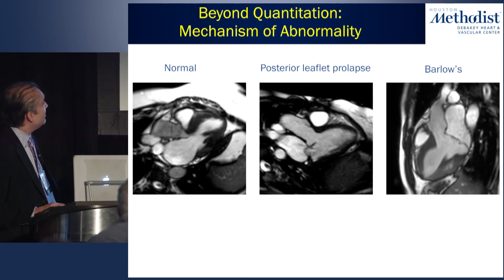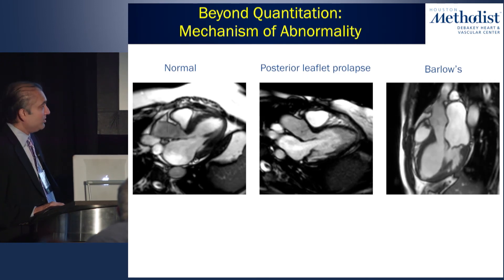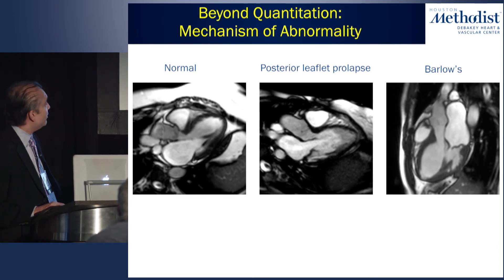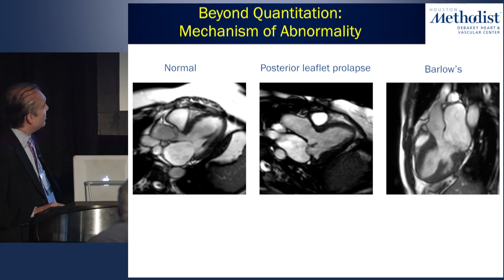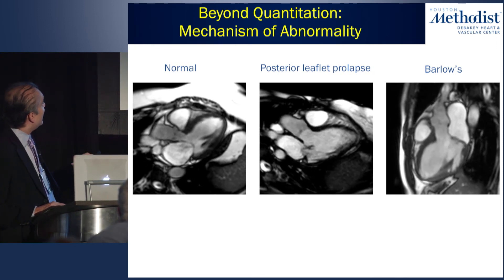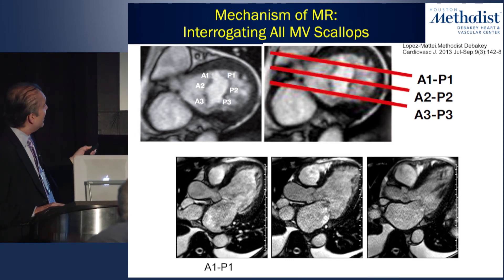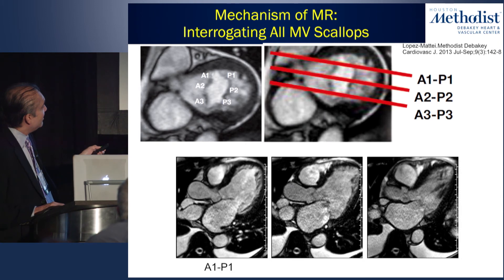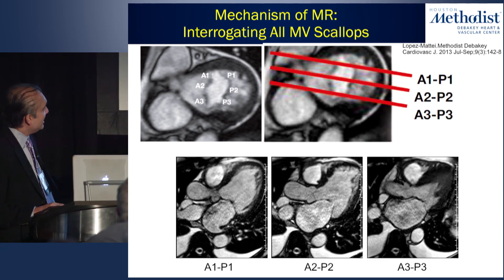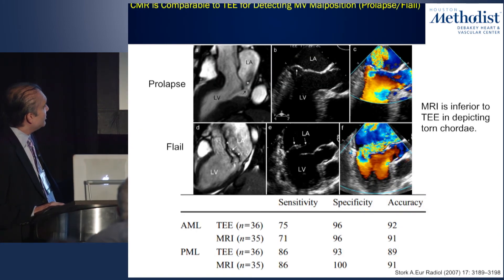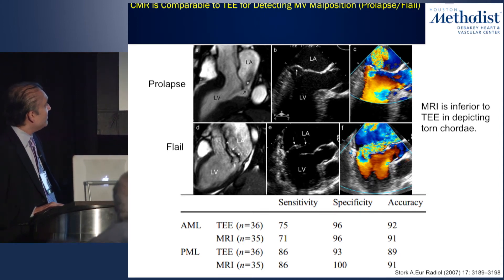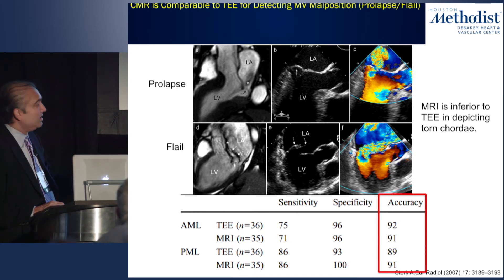CMR can also assess the mechanism of MR abnormality through high-resolution views of the mitral valve, identifying patients with Barlow's disease, posterior leaflet prolapse after prior repair, or normal coaptation. This is performed with a series of three-chamber views interrogating each individual scallop: A1/P1, A2/P2, and A3/P3. A published study comparing CMR and TEE against surgical findings showed comparable accuracy in identifying primary leaflet abnormalities.